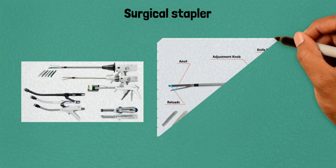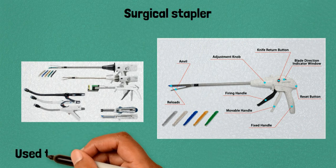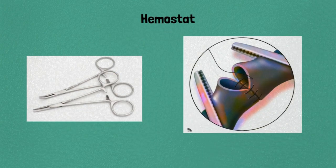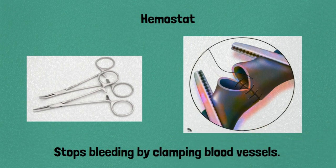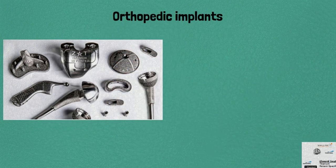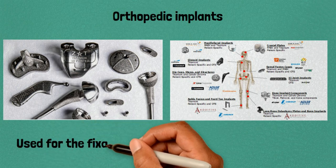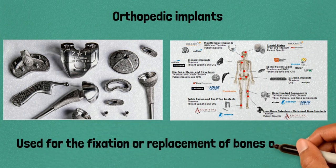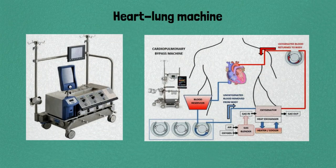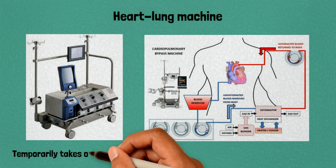Thirty-seven: surgical stapler, used to close wounds or connect tissues during surgery. Thirty-eight: hemostat, stops bleeding by clamping blood vessels. Thirty-nine: orthopedic implants, used for the fixation or replacement of bones or joints. Forty: heart-lung machine, temporarily takes over the functions of the heart and lungs during cardiac surgery.